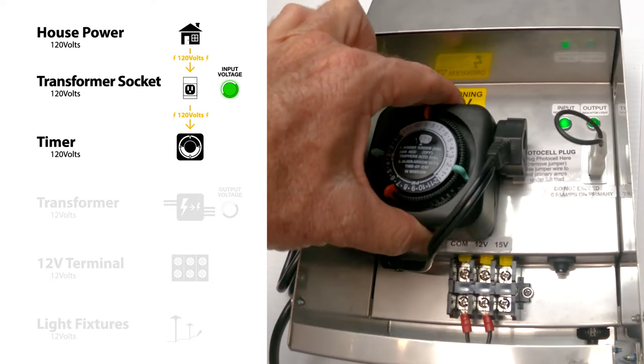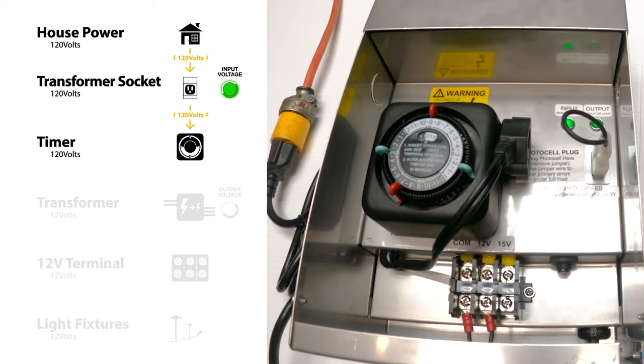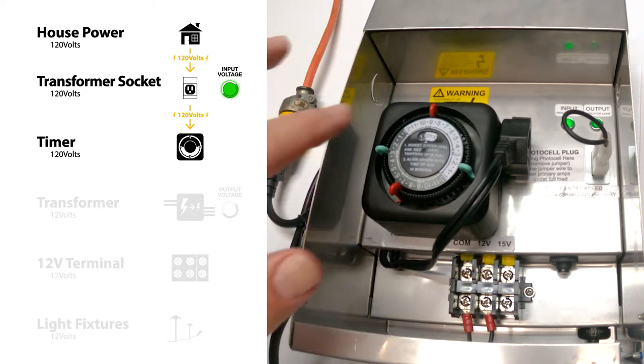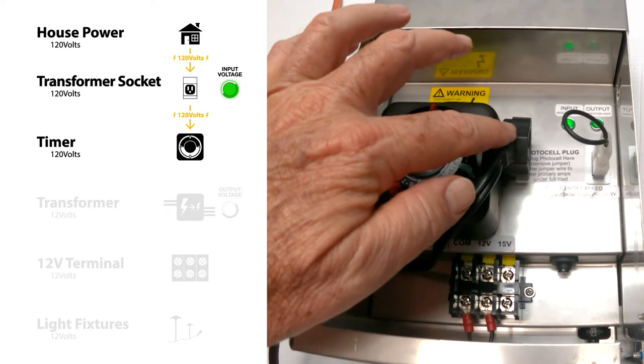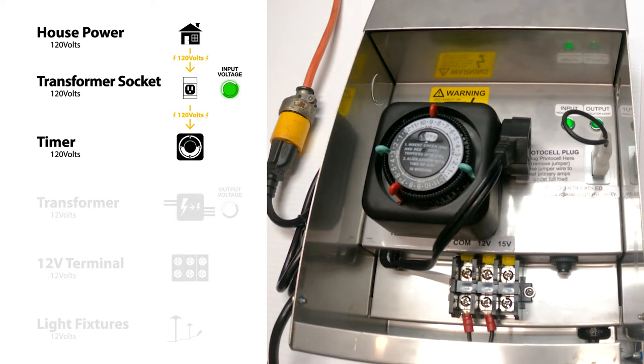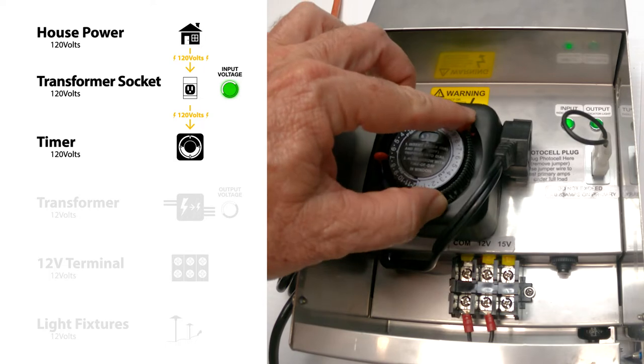We plug the timer into the socket. So the timer is in place. It's still 120 volts. The timer when it's on is putting 120 volts on and it's coming down to the transformer. I'm going to turn this on.